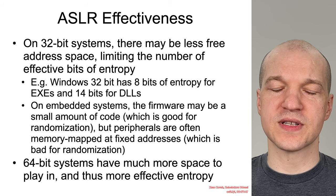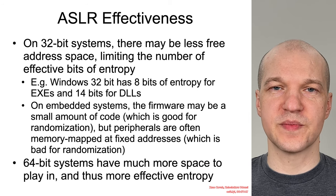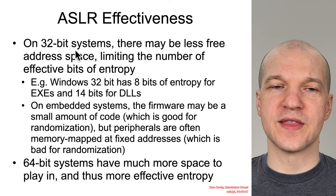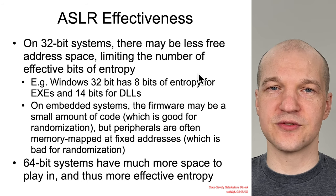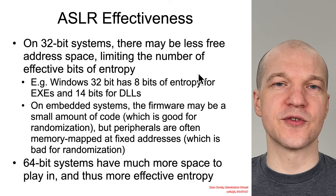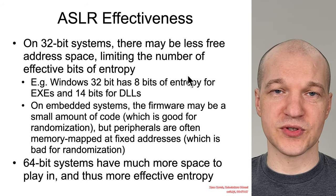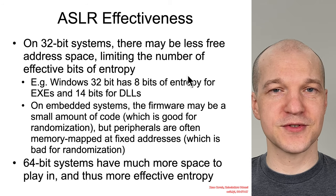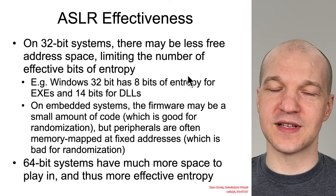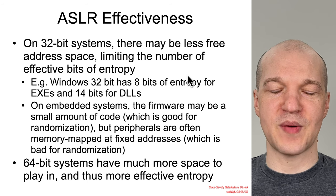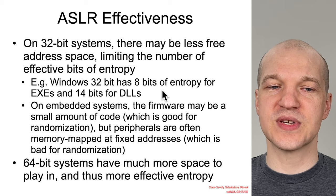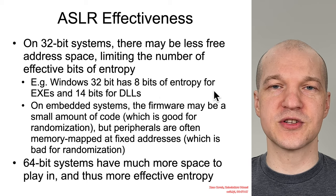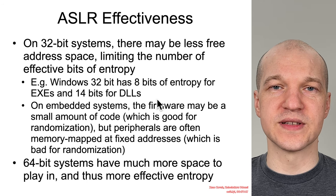When it comes to the effectiveness of ASLR as an exploit mitigation, it sort of depends. On 32-bit systems, there's less address space that's free. If the system is like Windows or Linux or some large operating system, it's probably using a lot of that space, so the available memory randomization is less. Specifically, on a Windows 32-bit system, it only has 8 bits of entropy — 8 bits of randomization for the addresses for EXEs in memory, and 14 bits for DLLs or shared libraries in memory.